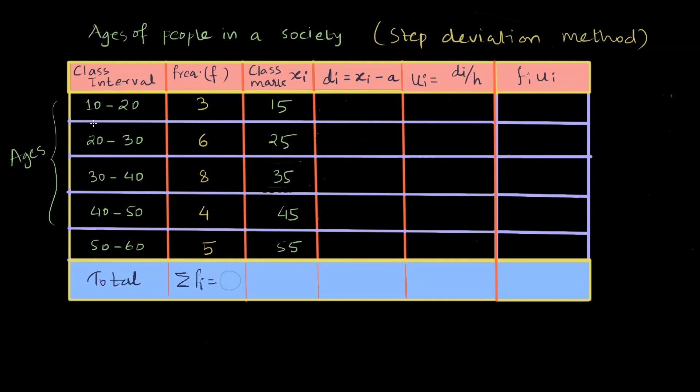We already have class mark written. Class mark is nothing but the midpoint of each class interval and it is found by adding the upper and lower limit. In this case, 10 plus 20 divided by two, that gives us 15.